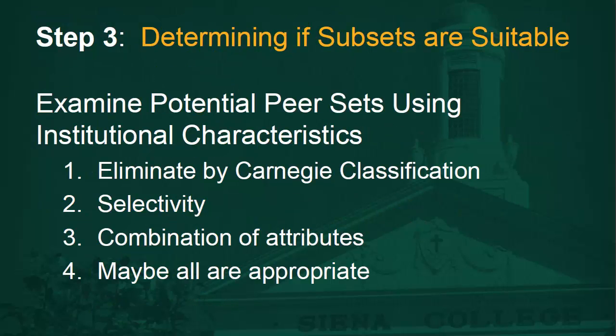The next possible step is to determine if the peer subset groups are suitable for your institution. For example, you can examine the sets of peers using your institutional characteristics and eliminate institutions that are not in your Carnegie Classification, institutions that are not as selective as your own, or you can use a combination of attributes such as alumni giving rate and endowment, or all that are appropriate.